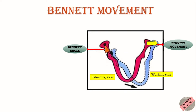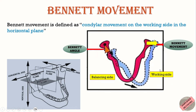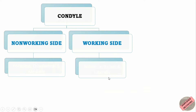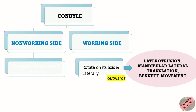Bennett Movement is defined as condylar movement on the working side in the horizontal plane. Basically it is the bodily side shift of the mandible, and when it occurs, it may be recorded in the region of the translating condyle of the non-working side. The working side condyle can just rotate on its axis or move outwards and laterally. This lateral movement is termed as laterotrusion or mandibular lateral translation or Bennett Movement.